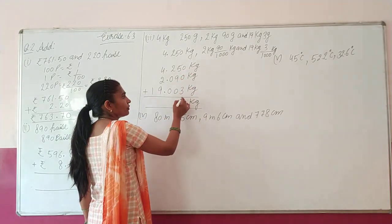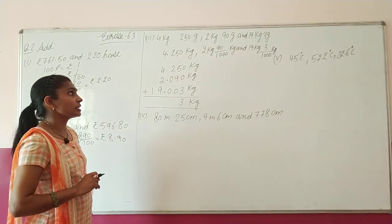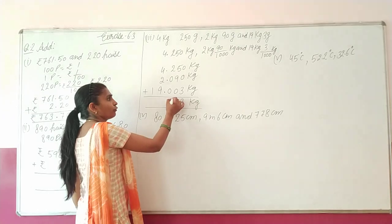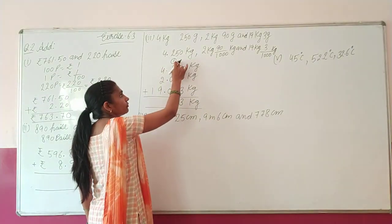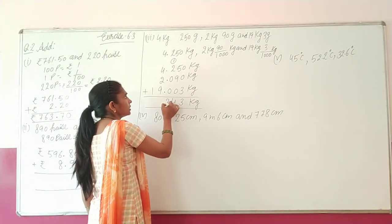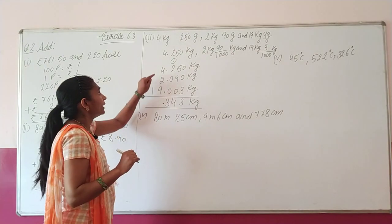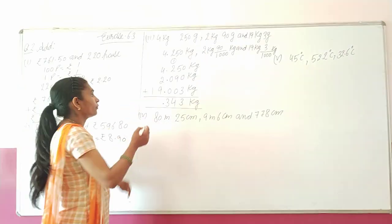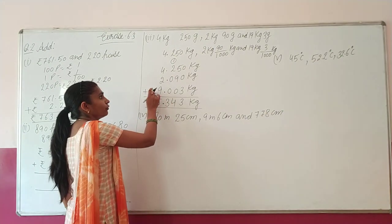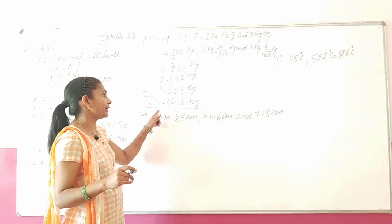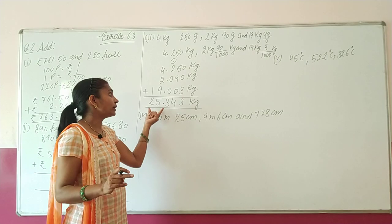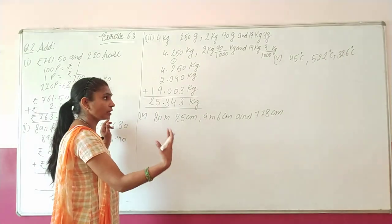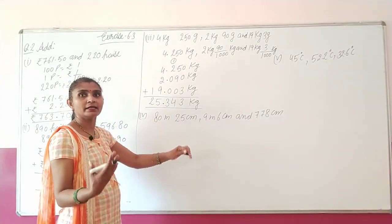Adding the three kilogram values: 0+0+3=3; 5+9=14, write 4 carry 1; 2+0+3+carry 1=6 then 5+9=14; after decimal: 4+2=6, 6+9=15 write 5 carry 1; carry gives 2. So the answer is 25.343 kg, that is 25 kilograms 343 grams. The digits to the left of the decimal are kilograms and to the right are grams.